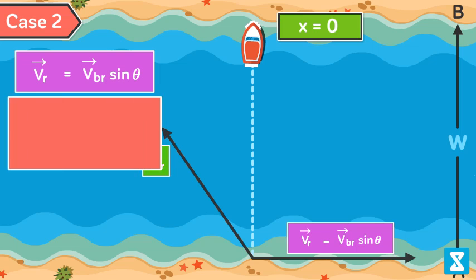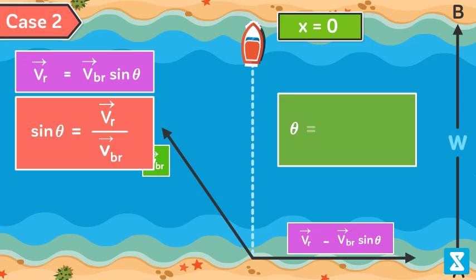Sin theta equal to VR divided by VBR, or angle theta equal to sin inverse VR by VBR. Hence, for the shortest distance, the boatman should row at an angle theta equal to sin inverse VR by VBR upstream from AB.